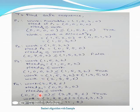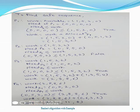In the same way, we check for process P4 with the modified work value of [2, 8, 8, 6]. Comparing the need of P4 with the current work, it is again true. So we modify the value of work and P4 is added to the safe sequence list.